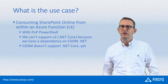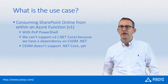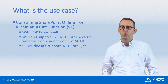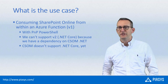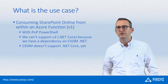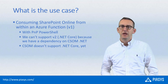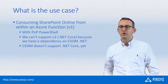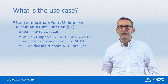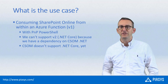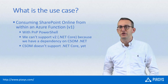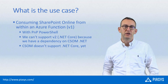In an Azure Function you can easily use PnP PowerShell as long as you use version 1 of the Azure Functions, because we still don't support .NET Core with PnP PowerShell, mainly because we have a dependency on CSOM — the client-side object model for SharePoint — which does not support .NET Core yet.